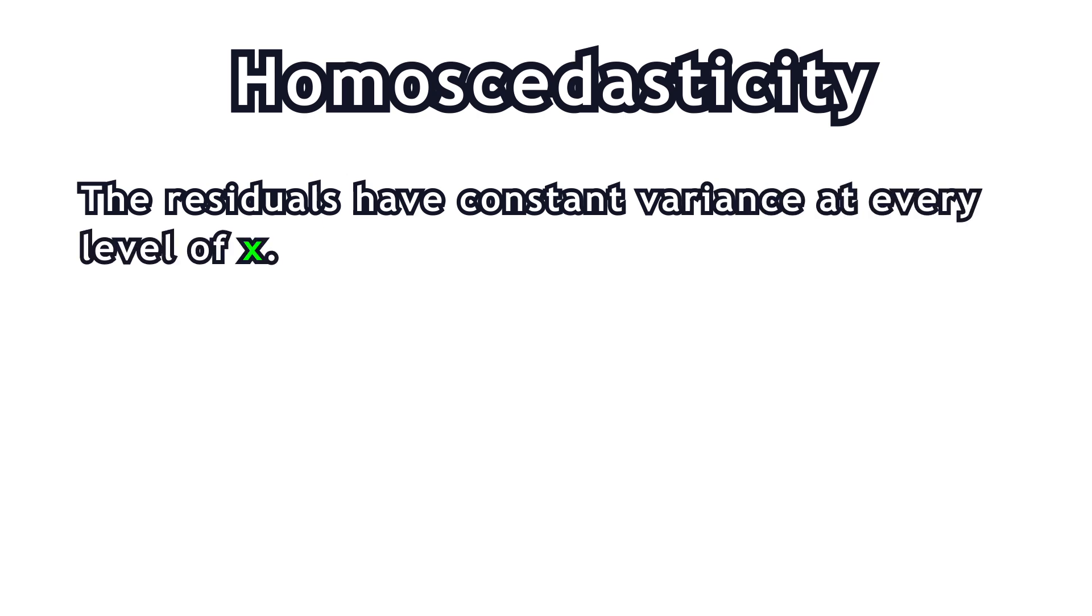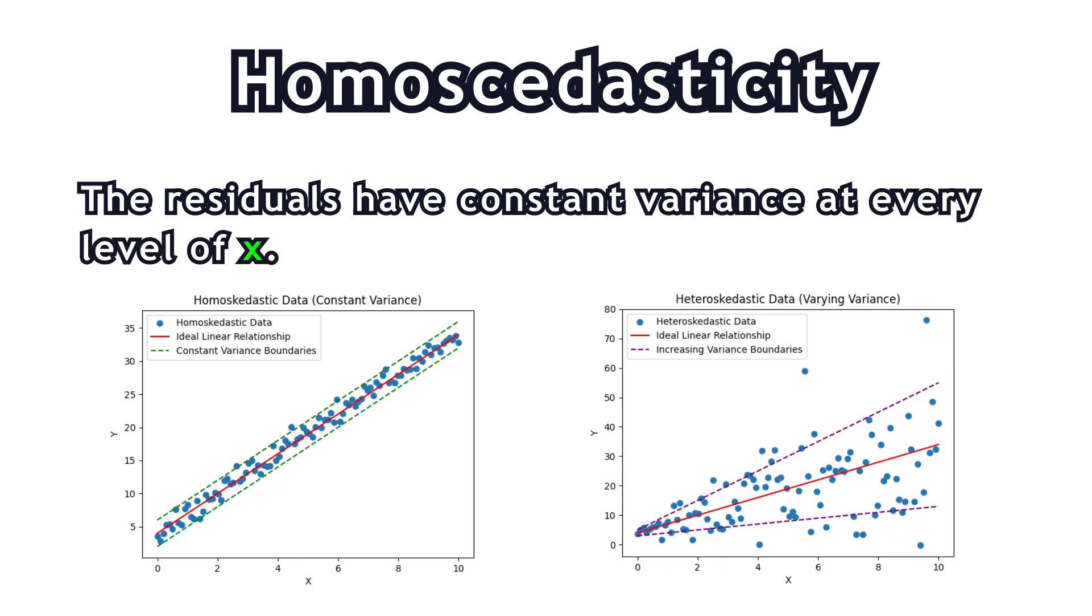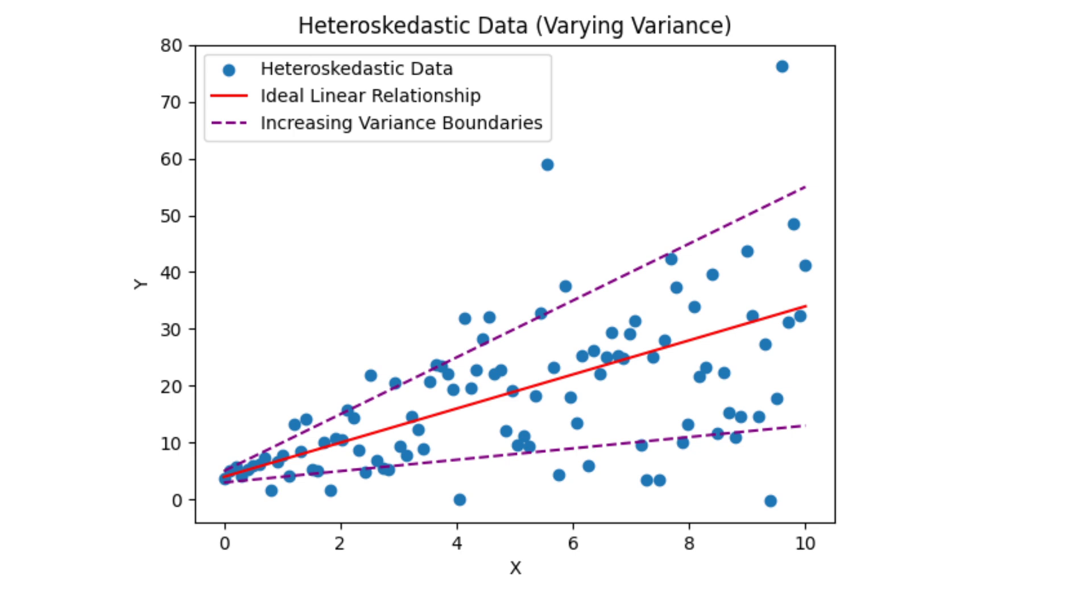Thirdly, the residuals have constant variance at every level of X. It matters because if the spread of the error changes, the model's predictions might be less reliable for certain values, having more errors than others.